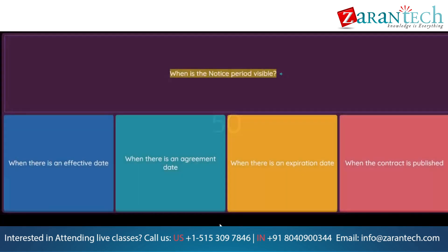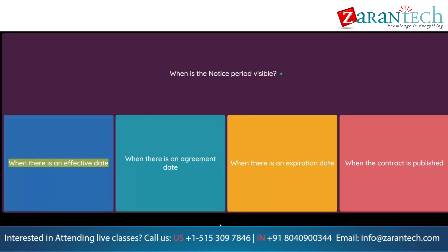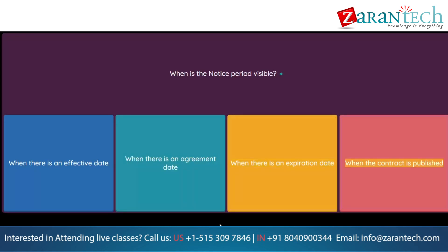Question: When is the notice period visible? Option 1: When there is an effective date. Option 2: When there is an agreement date. Option 3: When there is an expiration date. Option 4: When the contract is published.